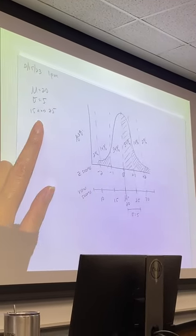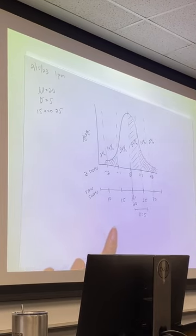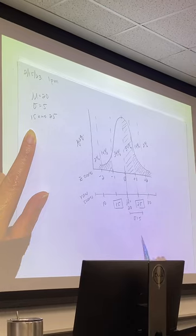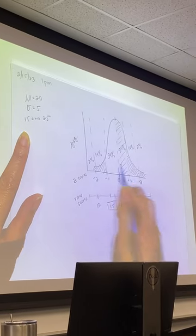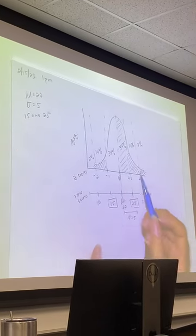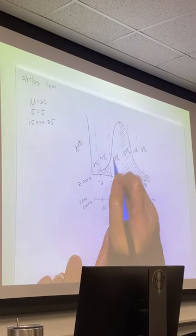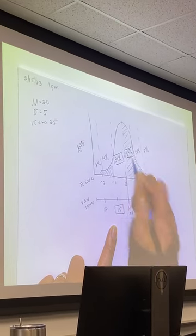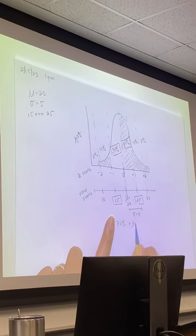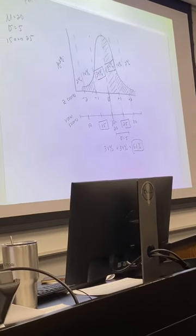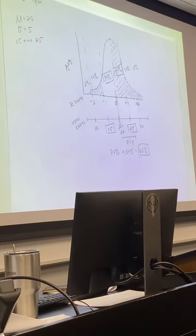So the question is, what percent of scores are between 15 and 25? We'll look up 15 and 25 here. And what do we have? We have to add 34% and 34%, right? So 34% plus 34% is equal to 68%. All right, everybody good with that?